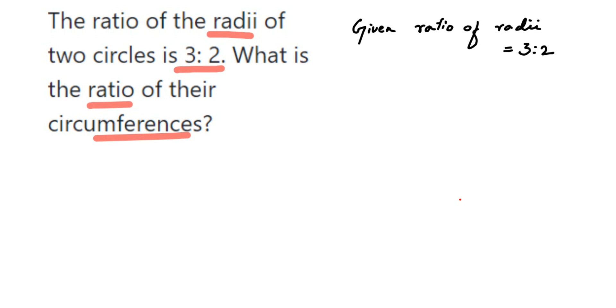Then in that case r1 will be equal to, since the ratio is 3 is to 2, it will be 3. You can take any variable here, let me take the variable as r itself. So 3r, and r2 will be 2r.